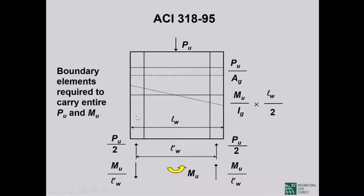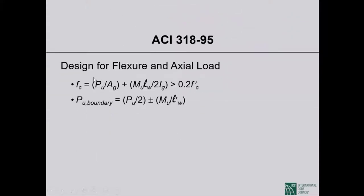Under the old approach, the two boundary elements at the ends had to be designed to carry the entire factored axial load and the entire factored bending moment. Each boundary element carried P sub U divided by 2 plus M sub U divided by the distance between centerlines of those boundary elements. This resulted in very large boundary elements with extremely large amounts of vertical reinforcement.